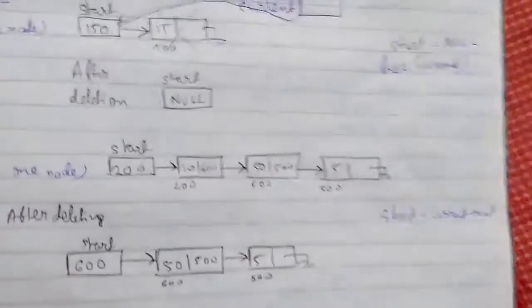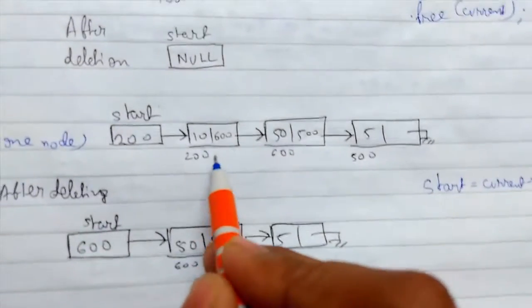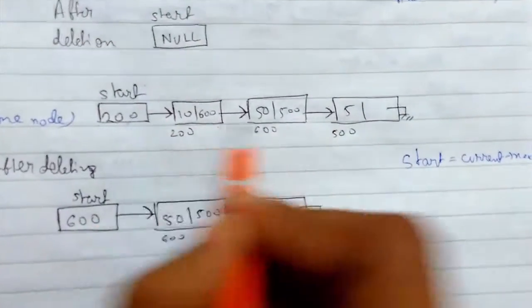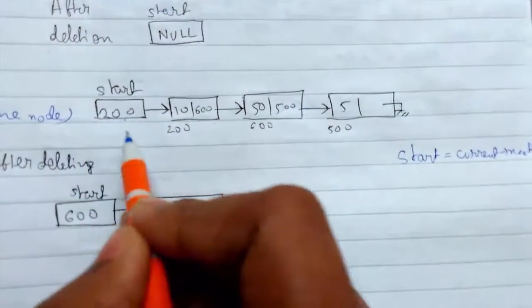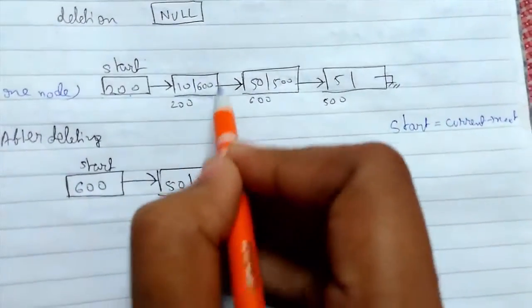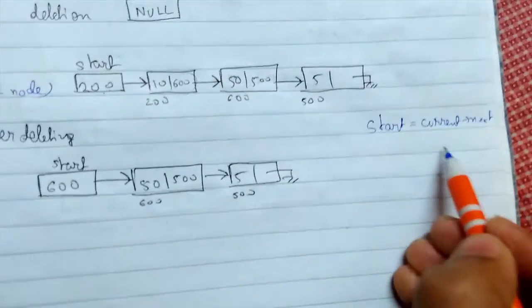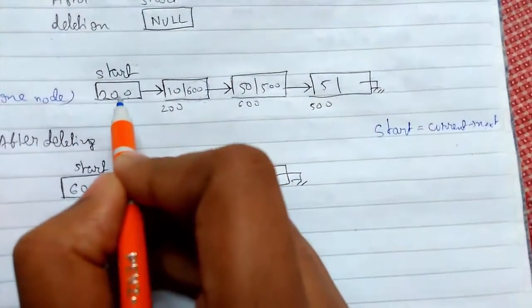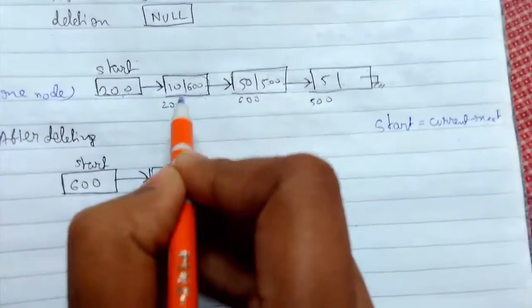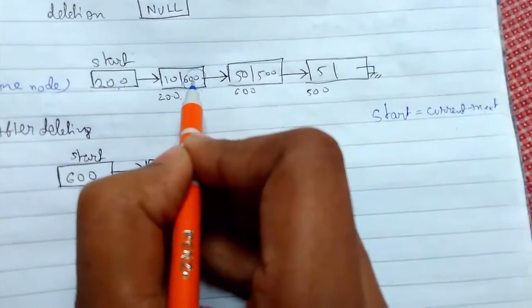So let us see what this means. If we update the start, we need this 500 value or we need a 600, this value here. So current arrow next, start arrow next 200, we have reached here and the next part of it is 600.